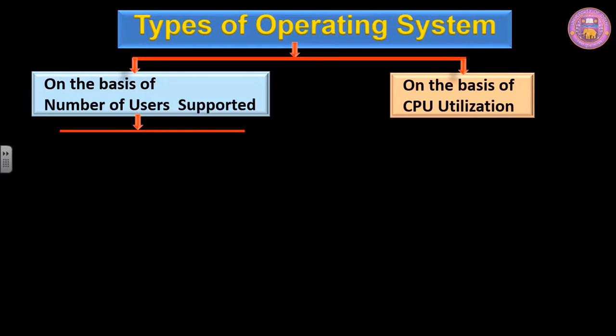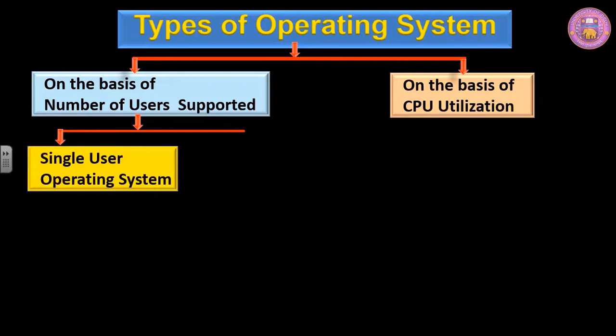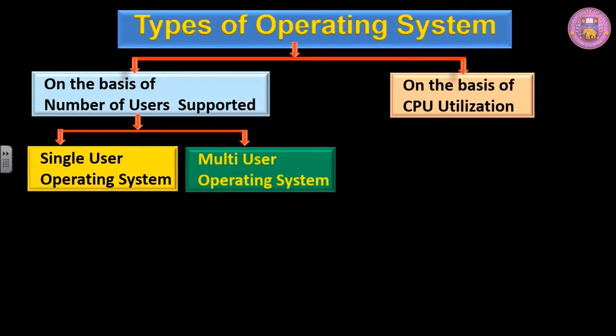On the basis of number of users supported, we have two types of operating systems: single user operating system and multi-user operating system.